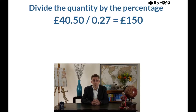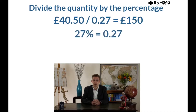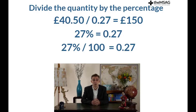I doubt there is a quicker or more effective shortcut in the entire UK CAAT. The method does require you to know that 27% equals 0.27 when expressed as a decimal. If you are ever not sure what a percentage is as a decimal, simply divide it by 100.